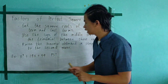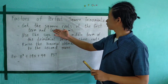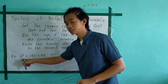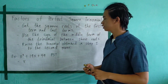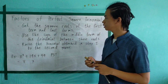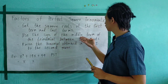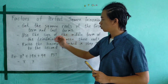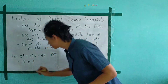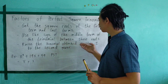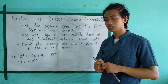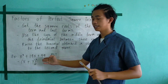So let's factor it out. First step: get the square root of the first term and the last term. Square root of x squared is x, and square root of 49 is 7. Second step: use the sign of the middle term of the trinomial between these roots — the sign is positive. Third step: raise the binomial obtained in step 2 to the second power. So this is the factor of our given trinomial: (x + 7) squared.